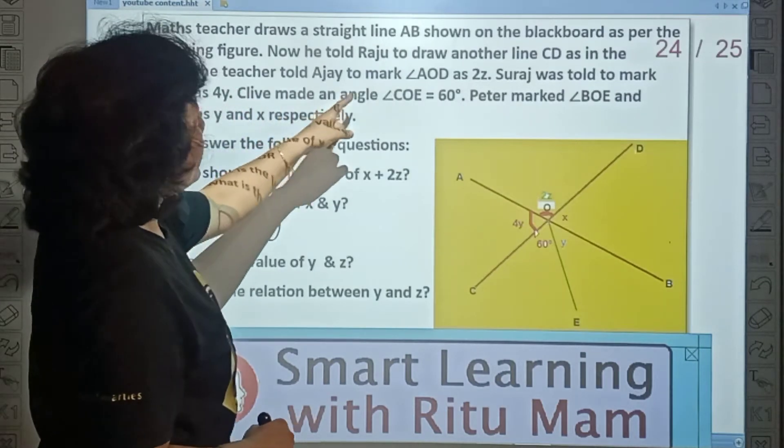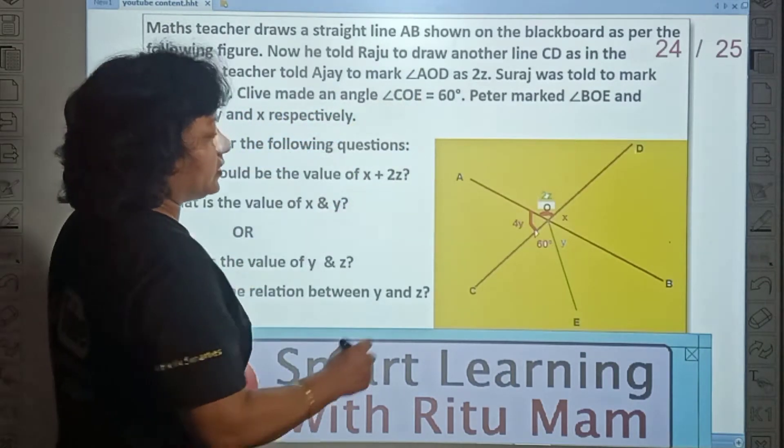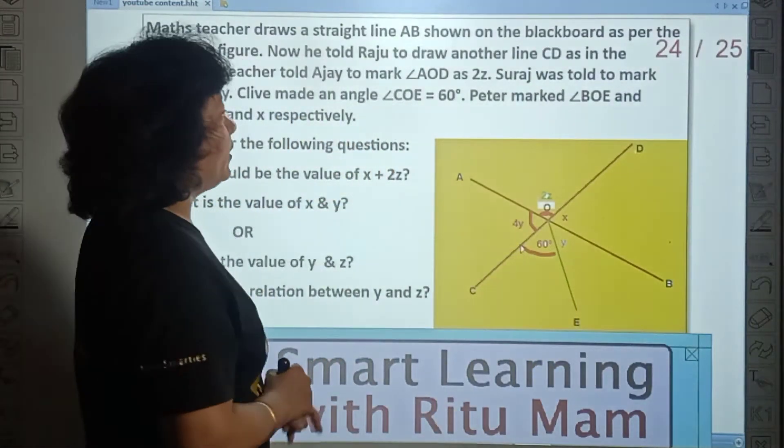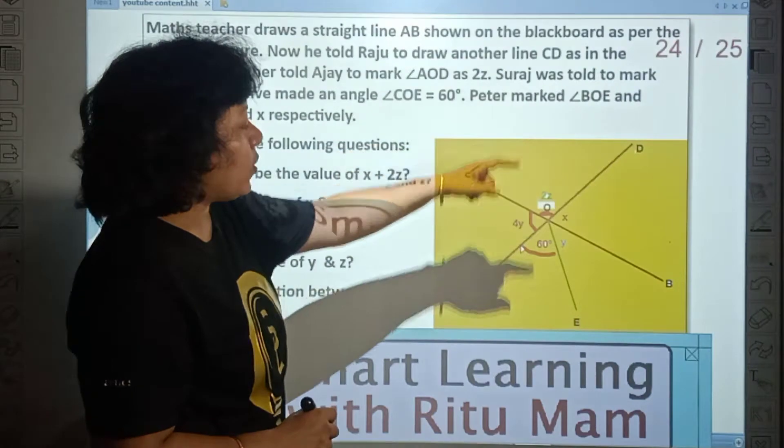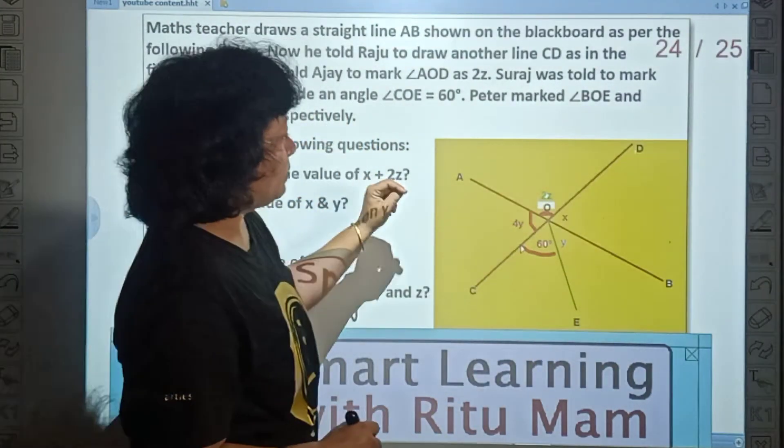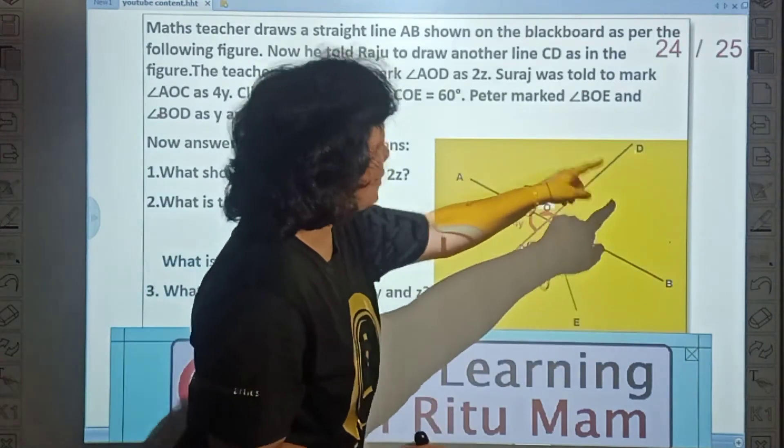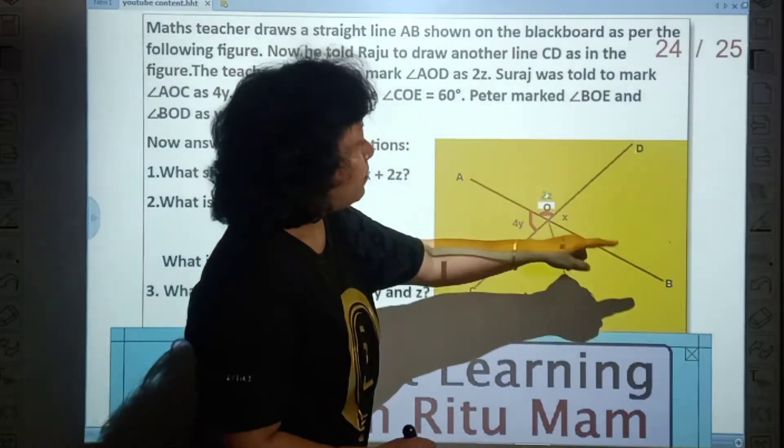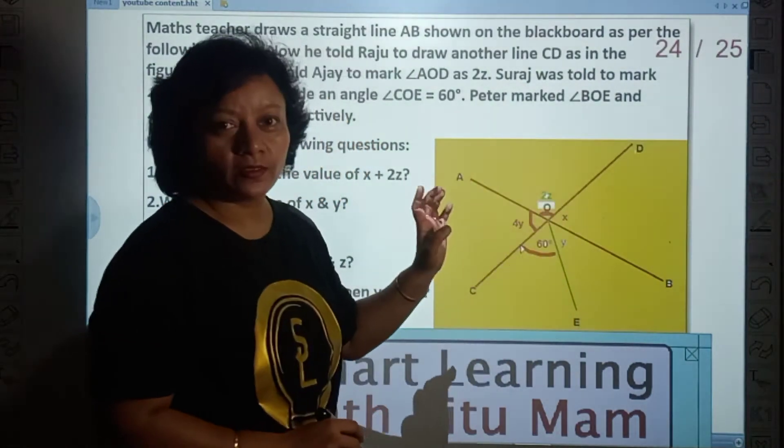Then Clive made an angle COE 60 degrees. This angle is 60 degrees. Peter marked BOE and BOD. Where is BOD? B, O, E is Y. And B, O, D is X.